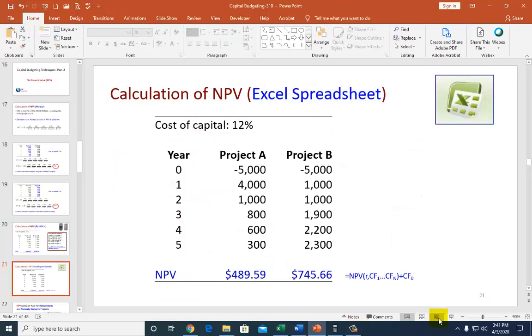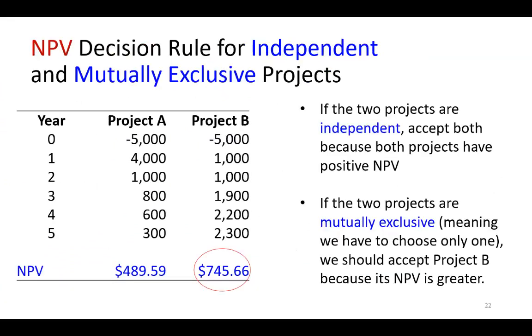Now, we can summarize that if these two projects are independent. This would be like a warehouse, this could be like a truck. These are two separate projects the firm is considering. Because both of them have positive NPVs, both should be accepted. So we're going to accept both.